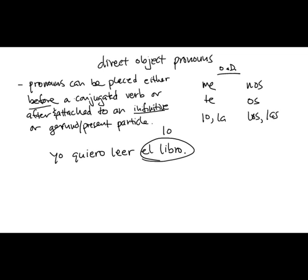So, where can we put this? Remember our rule here. Before a conjugated verb or after and attached to an infinitive. You can always put it before the conjugated verb. So, you could always put it here. Yo lo quiero leer. Literally, I, it, want to read. That's correct. Yo lo quiero leer. Yo, of course, is optional.